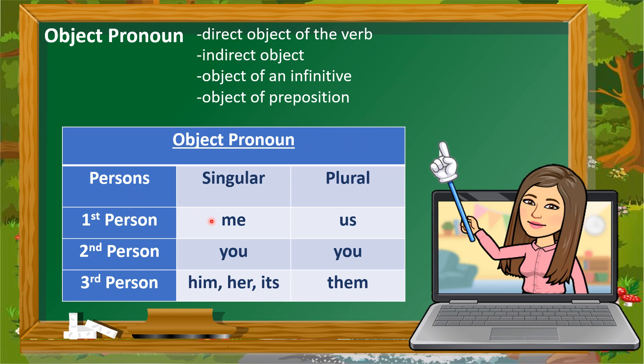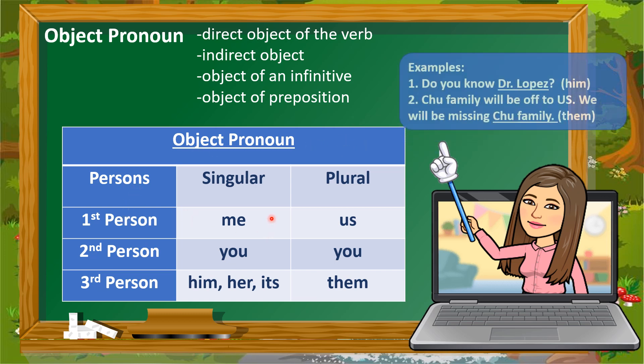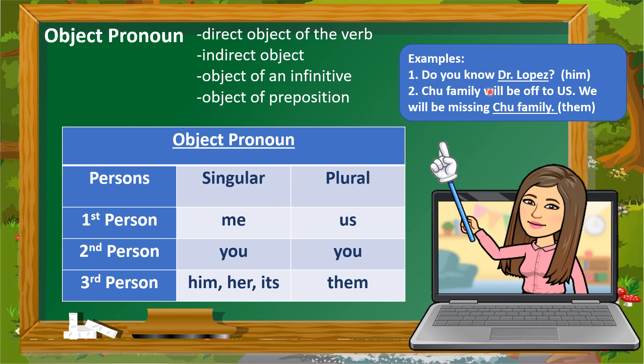Example one: 'Do you know Dr. Lopez?' We are referring to one person — singular, third person. If Dr. Lopez is a boy, masculine, we use 'him.' If Dr. Lopez is a woman, we do not use 'him' because that is for masculine only — we use 'her.'